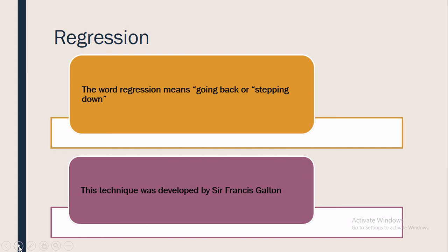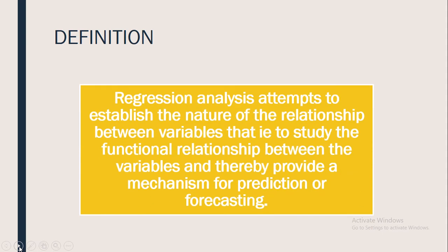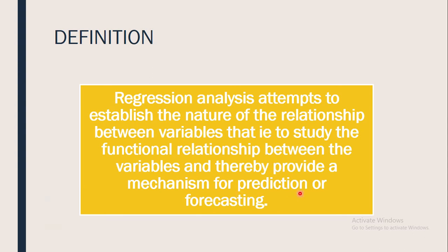The concept of regression is now widely used for estimating or predicting the unknown variable. The modern definition states that regression analysis attempts to establish the nature of the relationship between variables — that is, to study the functional relationship between variables — and thereby provide a mechanism for prediction or forecasting. So regression analysis is mainly used for predicting or forecasting.